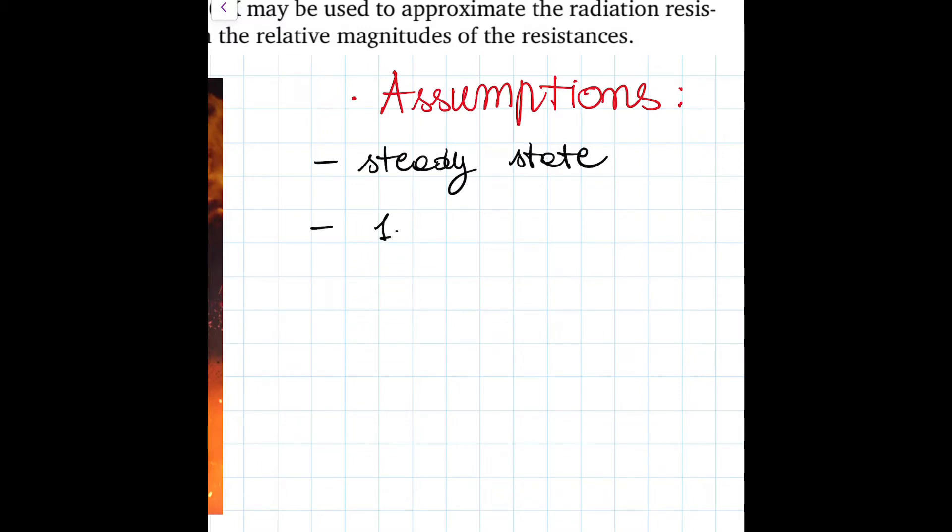The second one is 1D conduction. This is actually not obvious at first, but we are considering the firefighters' jacket as a simple plain wall. Therefore, we can simplify the problem as a 1D scenario.